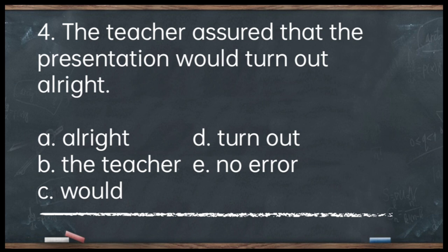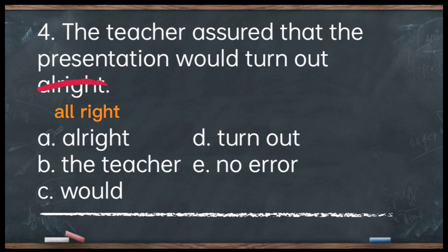Number 4. The teacher assured that the presentation would turn out alright. A. Alright. B. The teacher. The answer is letter A — 'alright.' Alright there is misspelled. Although acceptable in informal writing, in formal writing it should be written as two words: 'all right' — A-L-L, then R-I-G-H-T.